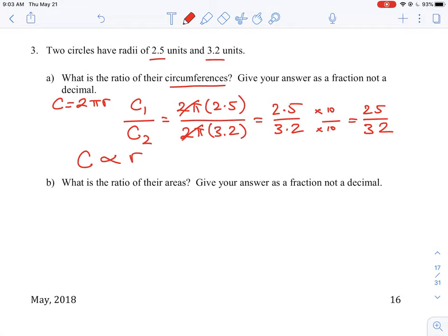So if we were to do this question quickly, we wouldn't have to calculate circumference. We could just take the ratio of the two radiuses. So we could have just went directly to 2.5 divided by 3.2, and then times by 10 to turn into a fraction. That's some of the background on how you do that question.